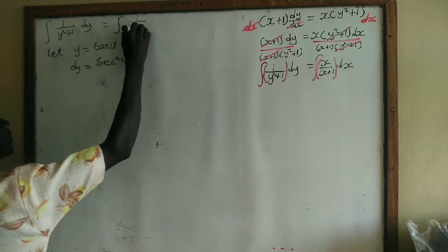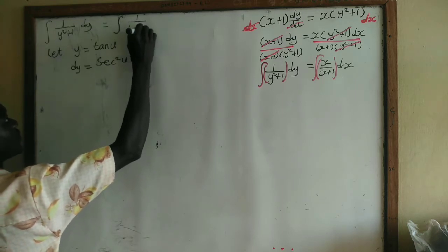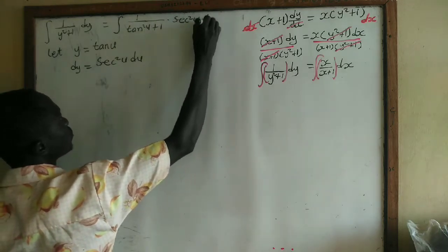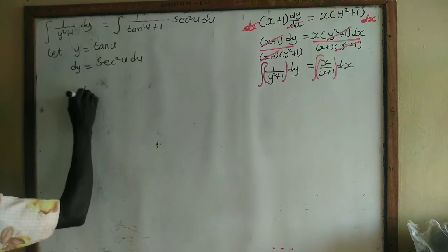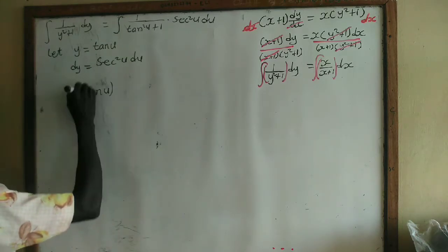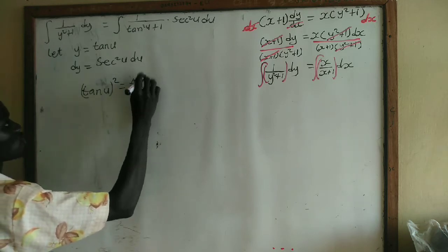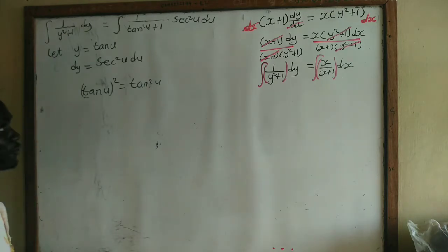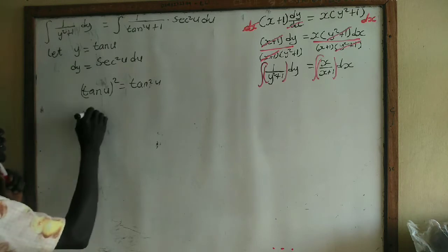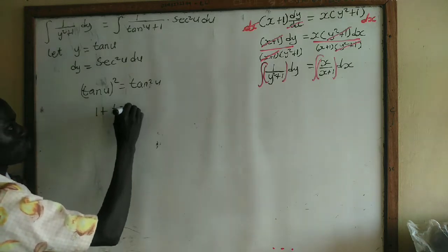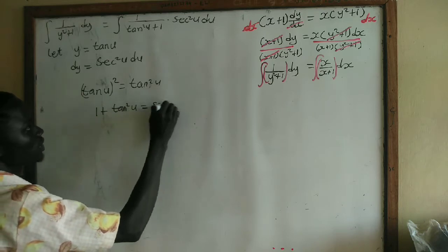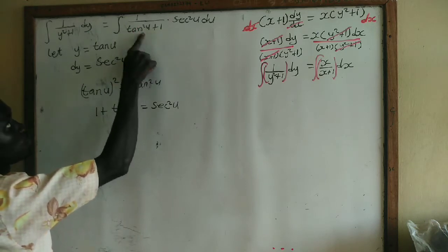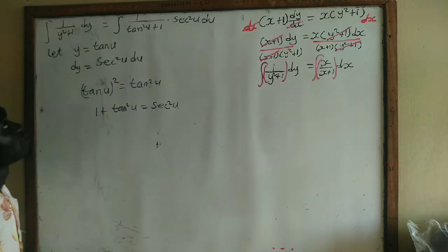...so we have the integral of 1/(tan²(u) + 1) times sec²(u) du. Remember that tan(u) squared is tan²(u). From a basic trigonometric identity, we know that 1 + tan²(u) = sec²(u), so in place of tan²(u) + 1 we substitute sec²(u).